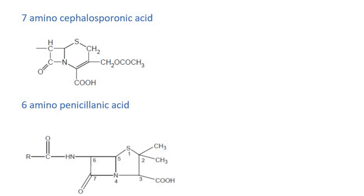Here you can see the basic structural feature of seven aminocephalosporanic acid and six aminopenicillanic acid. Penicillin has six aminopenicillanic acid with a four-member ring. This is called the beta-lactam ring, which is the necessary ring for antibacterial activity. Seven aminocephalosporanic acid is the basic ring structure of cephalosporins, and instead of a five-member thio group, we have a six-member ring.